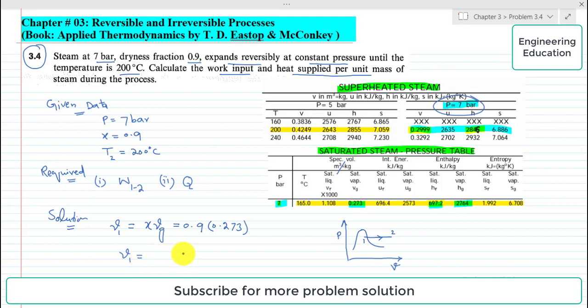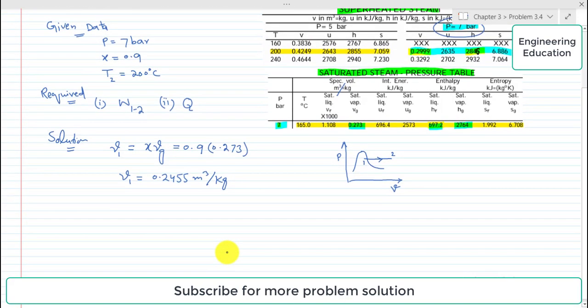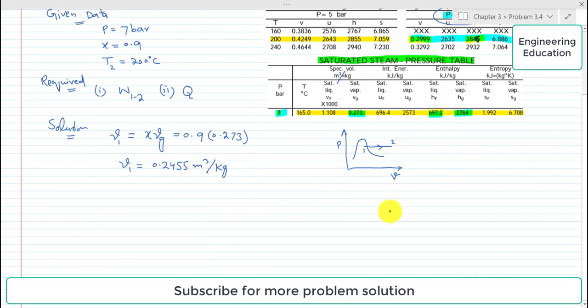Also, at 7 bar and 200 degrees Celsius, the steam is in superheated state. From superheated tables, if we look at the value of v, it is almost 0.3.